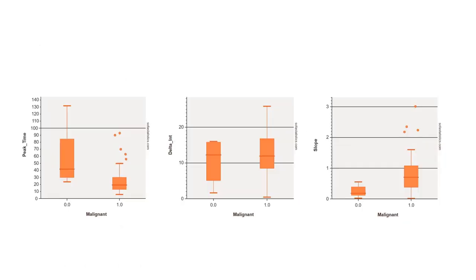Here are the results. Zero represents benign lesions and one represents malignant lesions. Time to peak is higher in benign lesions. The change in intensity between the start of the examination and the peak value is almost the same for benign and malignant lesions, while the slope of the time-intensity curve is very different — it is much steeper in the malignant lesions.